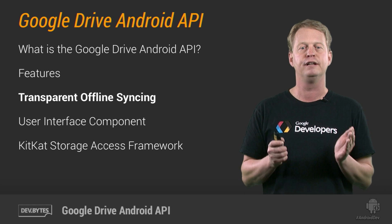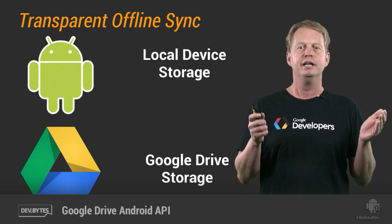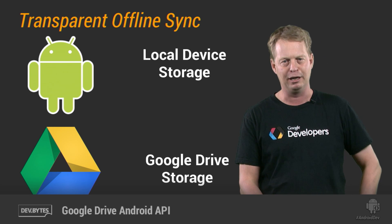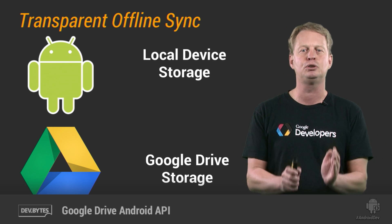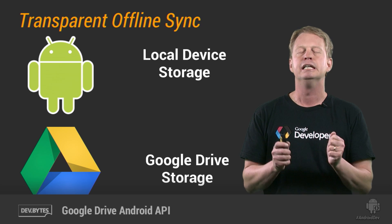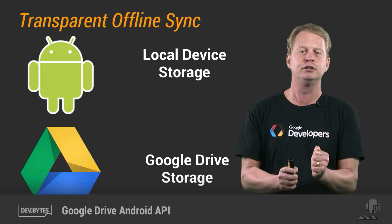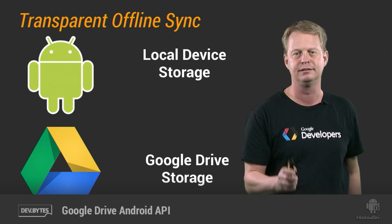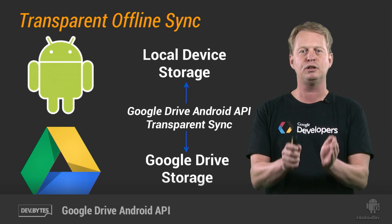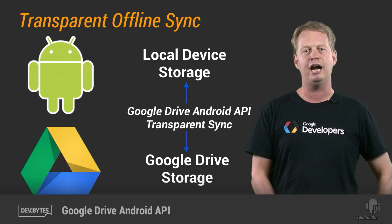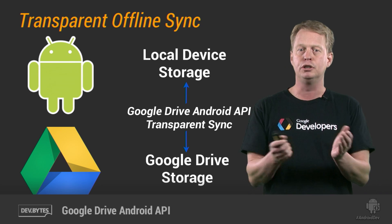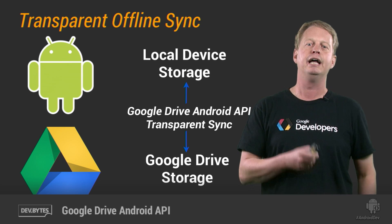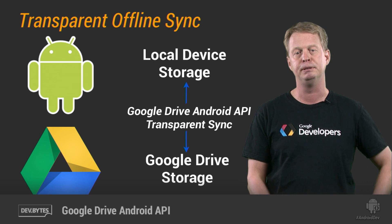So let's talk about the transparent offline syncing to begin with. As you are aware, an Android device has local storage, but Google Drive storage resides in the cloud. One peculiar thing about mobile devices is that you can never trust network connectivity — it changes network all the time, and very often has no network access at all. This makes storing things in the cloud difficult, but not with the Google Drive API, because the Google Drive Android API will make sure that your app will never fail when it writes data. Should communication with Google Drive not be possible, the API will temporarily store data locally and later sync that to Google Drive once connectivity has been re-established.